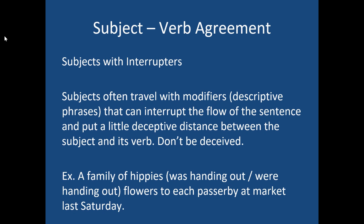Subjects often travel with modifiers — descriptive phrases — that can interrupt the flow of the sentence and put deceptive distance between the subject and the verb. For example: 'A family of hippies was or were handing out flowers to each passerby last Saturday.' You might be tempted to choose 'hippies' as the subject, but a subject can never be in a prepositional phrase. What I'm saying is 'a family was handing out.' Hippies is just a temptation. The subject is 'family', and the SAT does that a lot.